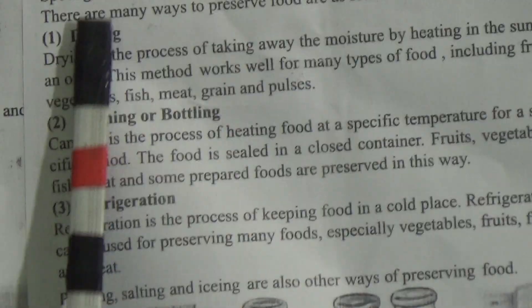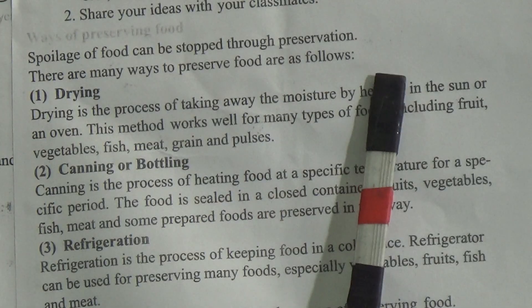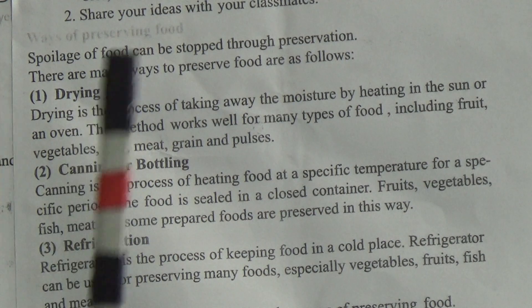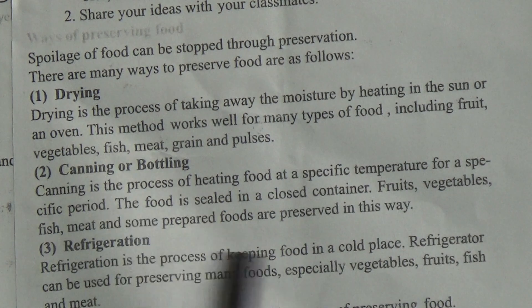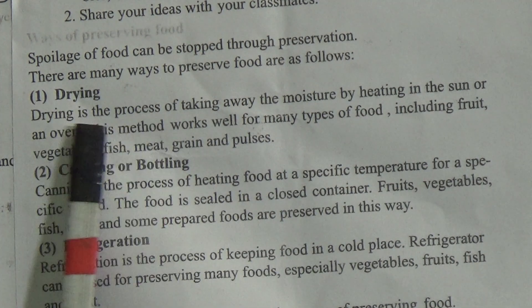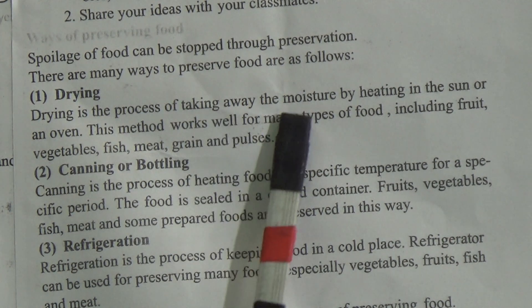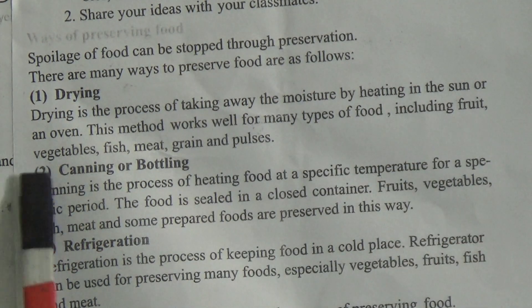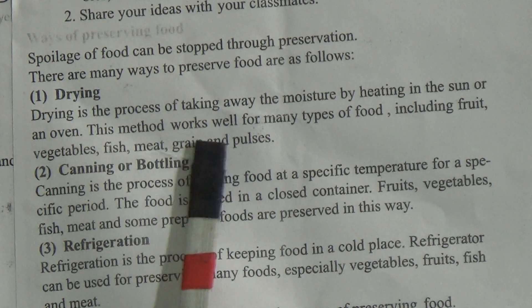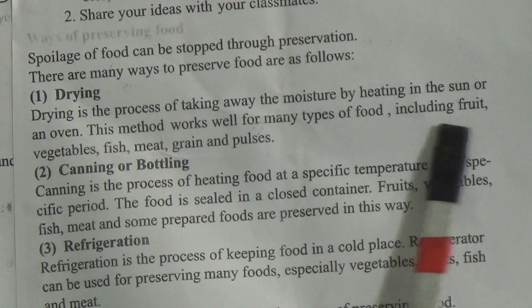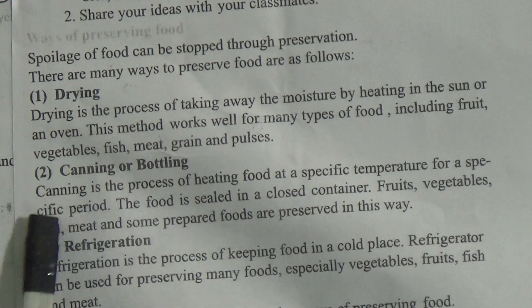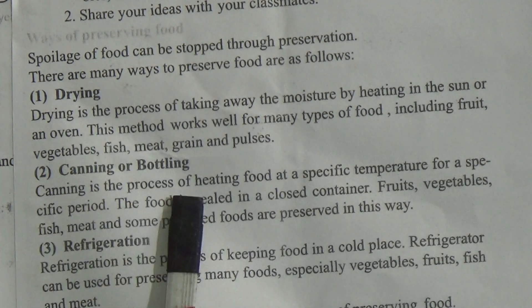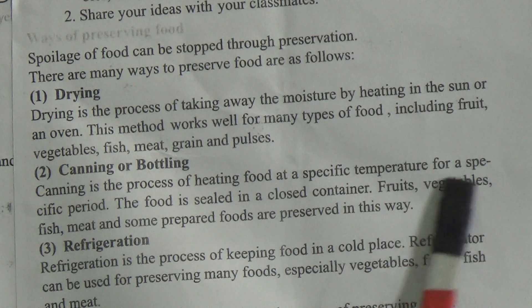Ways of preserving food: spoilage of food can be stopped through preservation. There are many ways to preserve food: number one — drying; number two — canning or bottling; and number three — refrigeration. Drying is the process of taking away the moisture or water by heating in the sun or an oven. This method works well for many types of food including fruit, vegetables, fish, meat, grain, and pulses. Canning is the process of heating food at a specific temperature for a specific period.